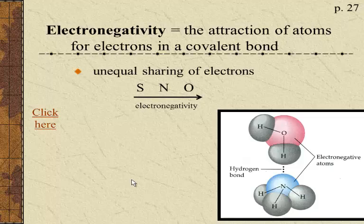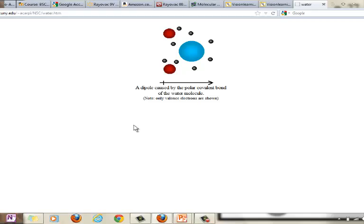So back to electronegativity. Electronegativity is the attraction of atoms for electrons in a covalent bond — basically, not all atoms like to share equally. Some of the classic ones we're going to encounter are sulfur, nitrogen, and oxygen; they all have pretty high degrees of electronegativity in biological molecules. So if you see sulfur, nitrogen, or oxygen in a molecule, the first thing to think of is they don't share the electrons equally. For example, in a water molecule, the oxygen is electronegative so it likes to spend more time with the electrons than the hydrogens do, causing an unequal sharing.